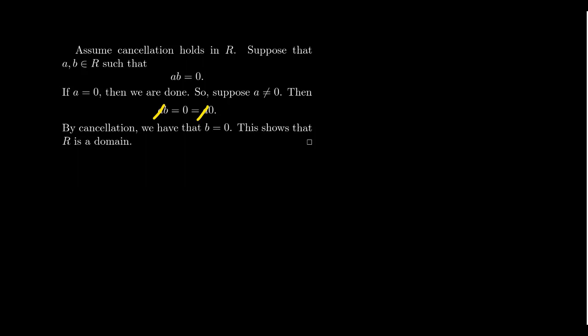So for rings, having cancellation is the same thing as having the zero product property. A domain, which by definition takes on the zero product property, you also have cancellation. This is a very important thing about domains. Commutativity was never assumed. This is also true for integral domains, but we don't need it to be commutative. For an integral domain, you have cancellation.